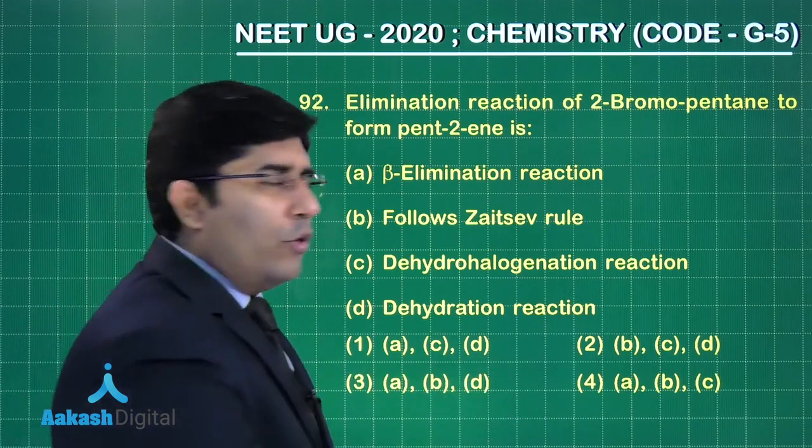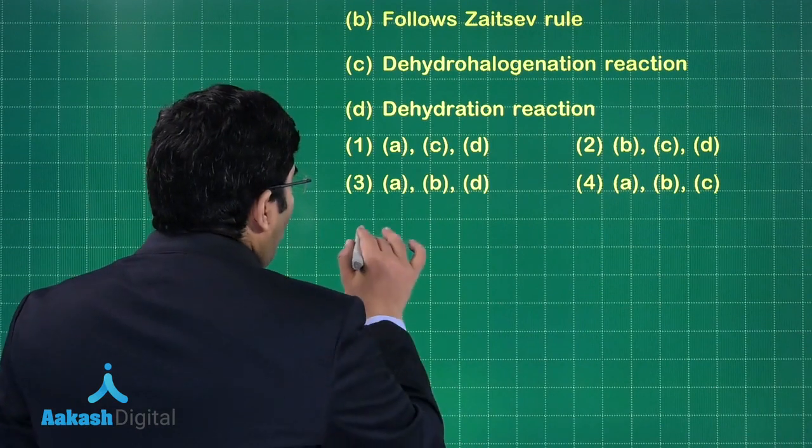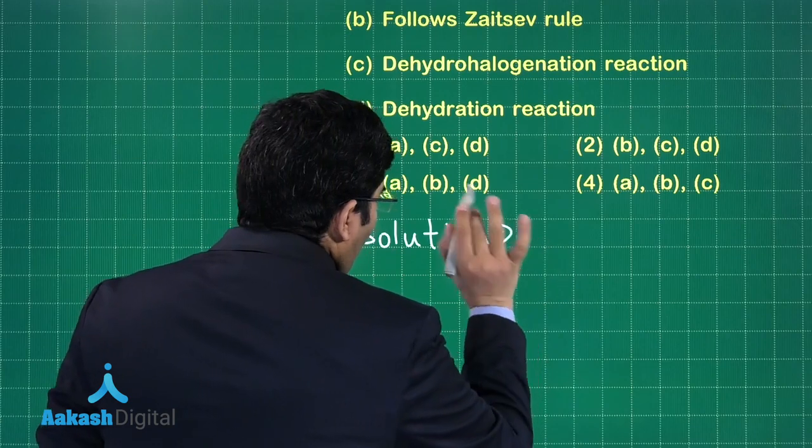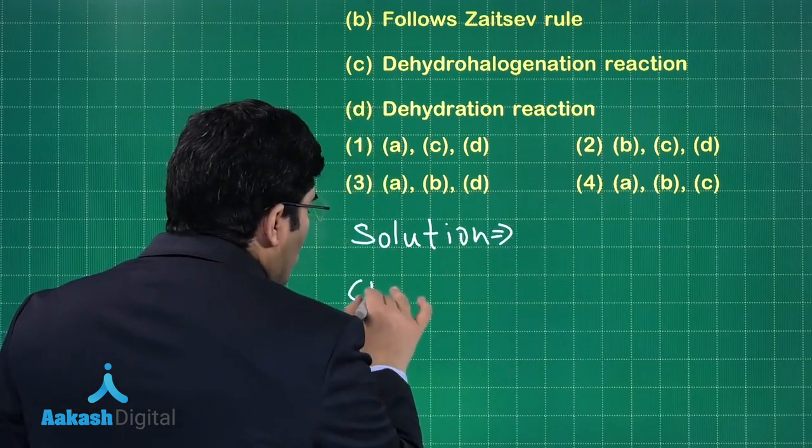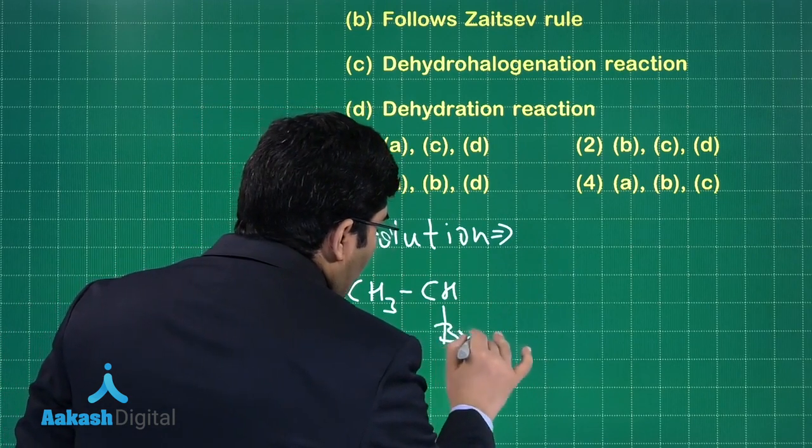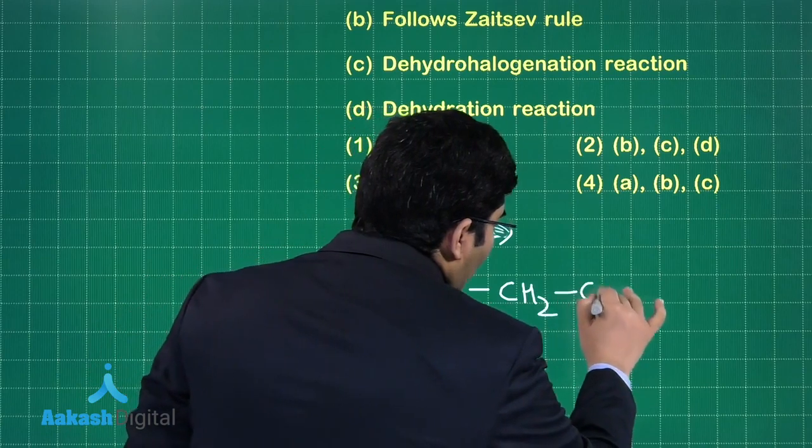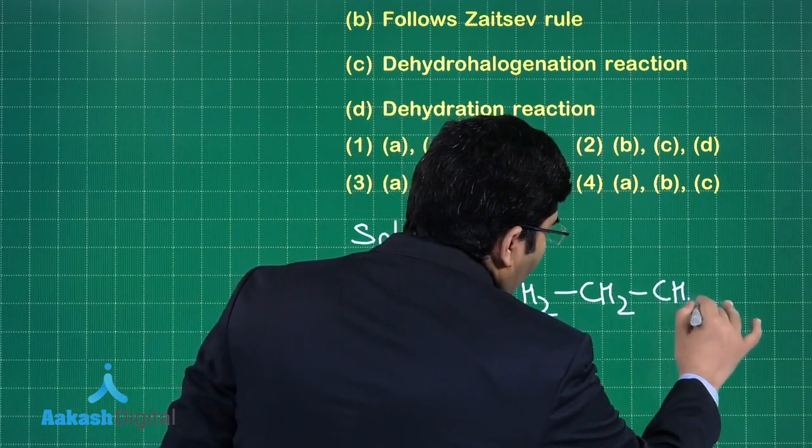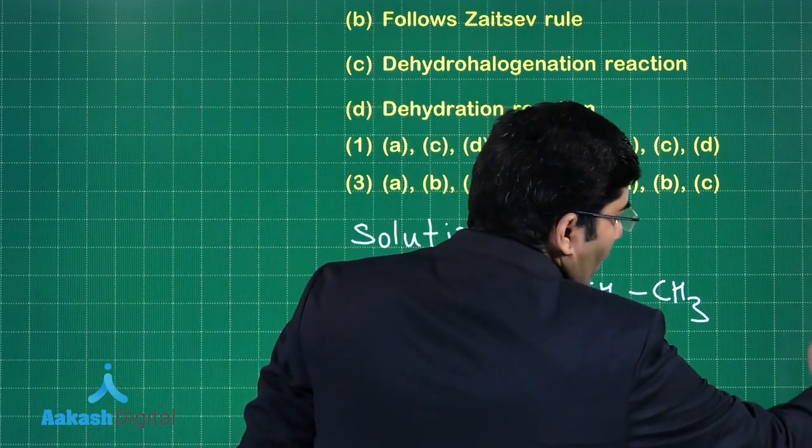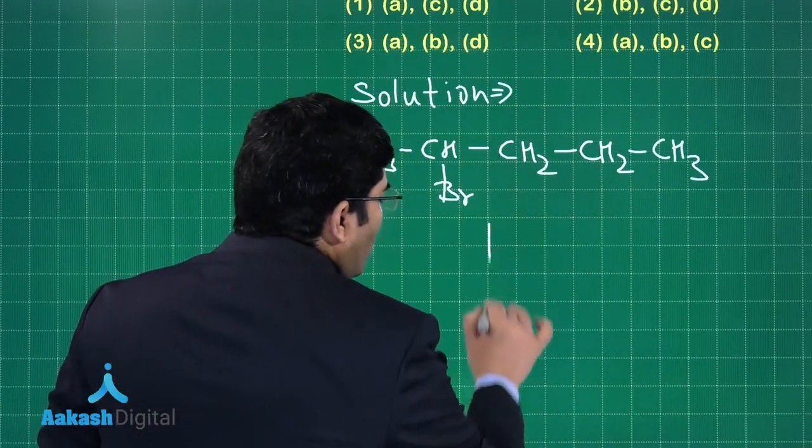The solution: it's 2-bromopentane, so CH3-CH with Br, then CH2-CH2-CH3. This is 2-bromopentane and we are adding a base, so let us suppose the base is...